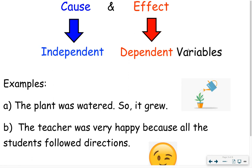So with that said, let's practice independent and dependent variables. I have two examples here and I want you to identify which part of the statement is an independent variable and which is a dependent variable. So example A, the plant was watered, so it grew. What is the independent variable and what's the dependent variable in this statement? Take a second. You can pause the video if you want.